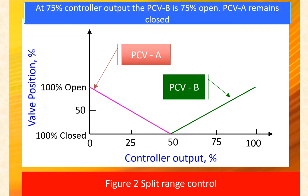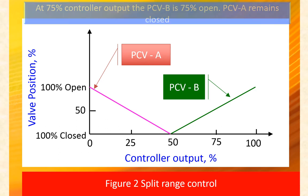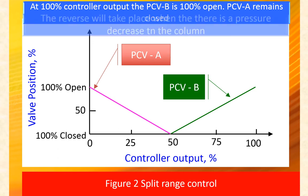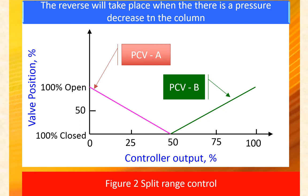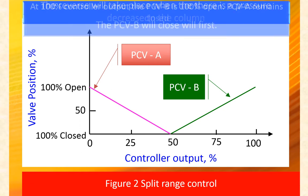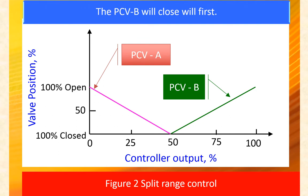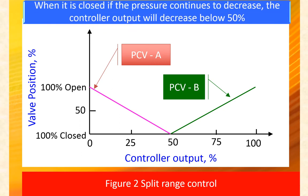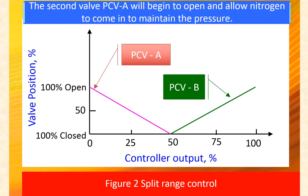As the output increases beyond 50%, PCVB starts opening. At a controller output of 75%, PCVB is 50% open. The reverse takes place when there is a pressure decrease in the column. PCVB will close first, and if pressure continues to decrease, the controller output will decrease below 50%, and the nitrogen valve PCVA will begin to open and allow nitrogen to come in to maintain the pressure.